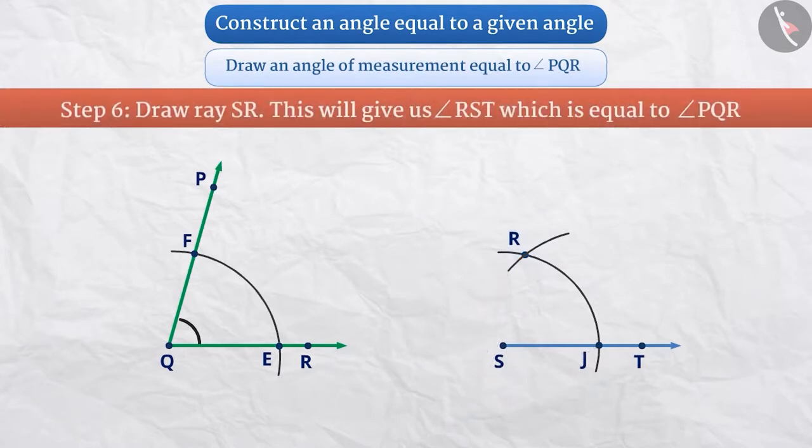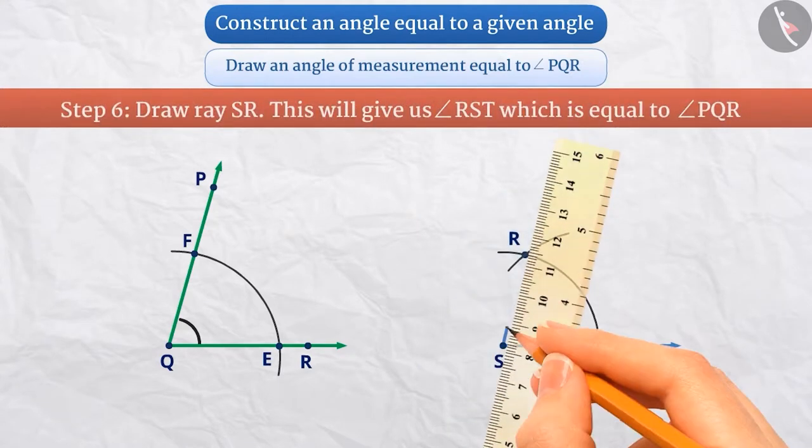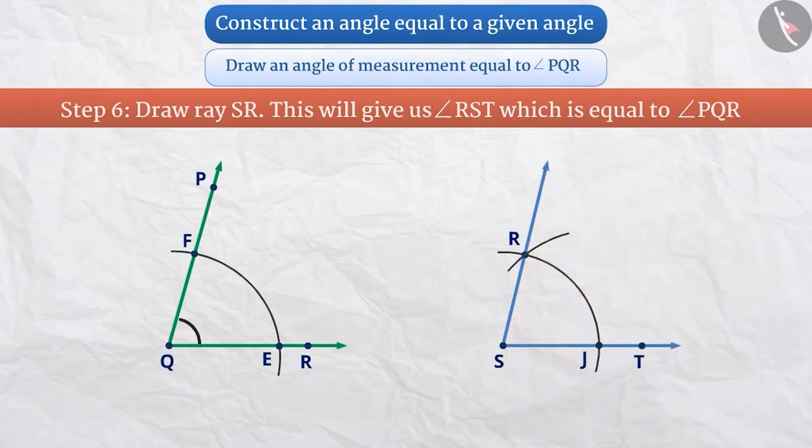Step 6: Now we will connect vertex S and point R and draw ray SR. This will give us angle RST which is equal to angle PQR.